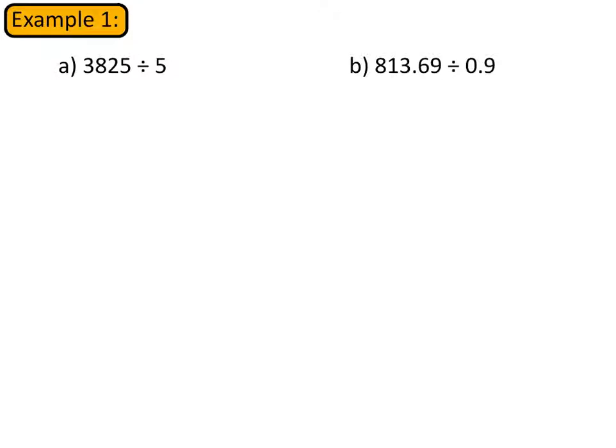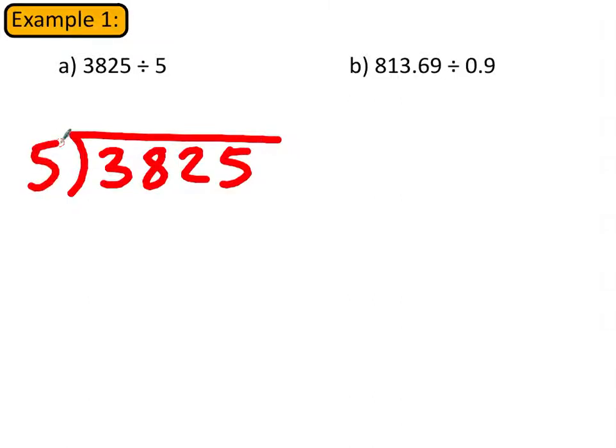We're going to write this out in the bus stop method where we put the 3825 there and the divisor 5 is going to go there. You do this by asking yourself questions starting from the left hand side.